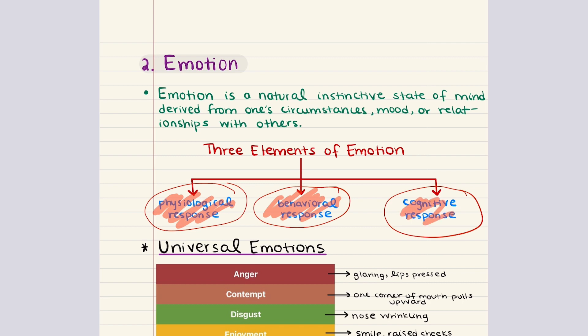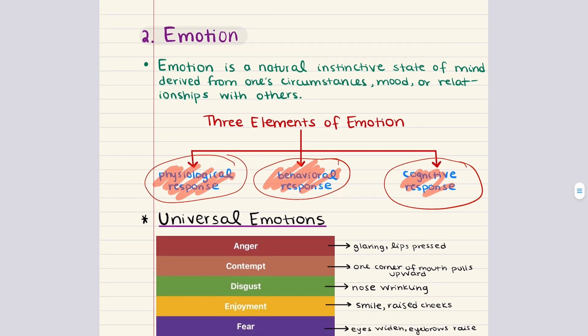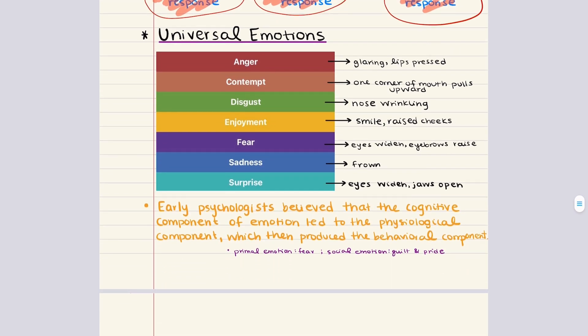The cognitive component of emotion is the subjective interpretation of the feeling being experienced. The determination of one's emotion is largely based on memories of past experiences and the perception of the cause of the emotion. Darwin argued that emotions are a result of evolution, and so emotions and their corresponding expressions are universal — all humans use the same set of facial muscles to show the same expressions when communicating emotions, regardless of their society or culture.